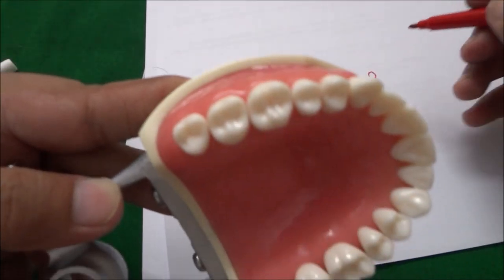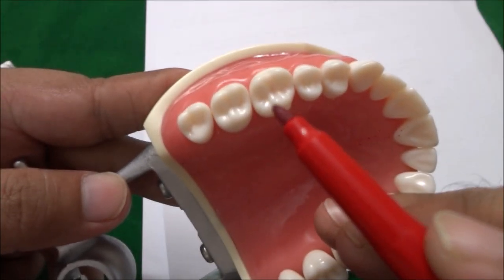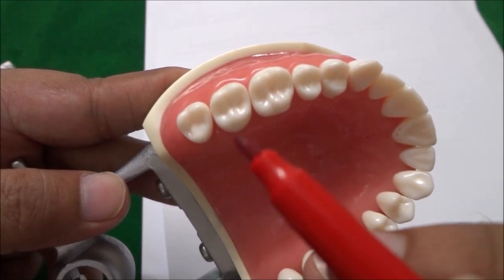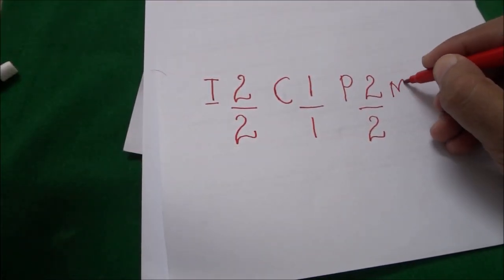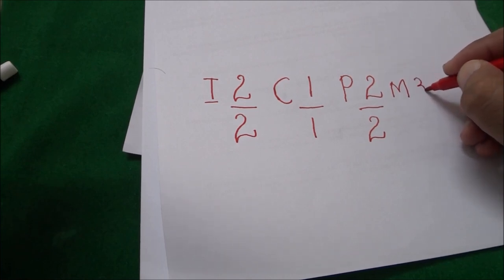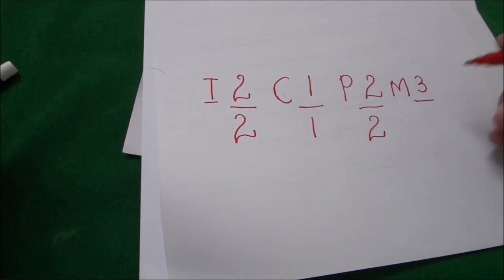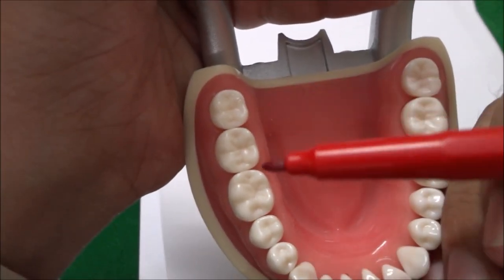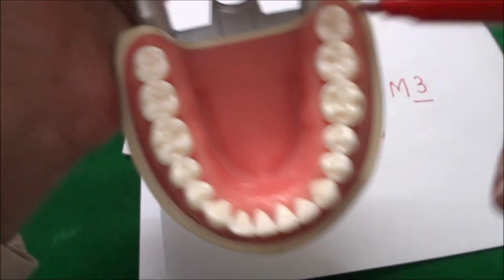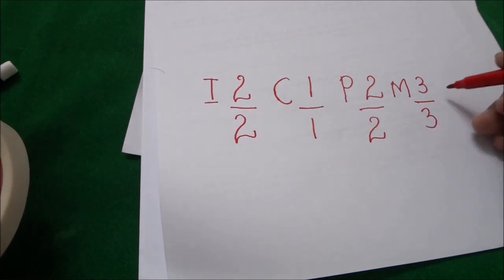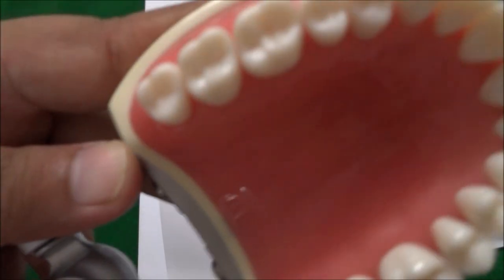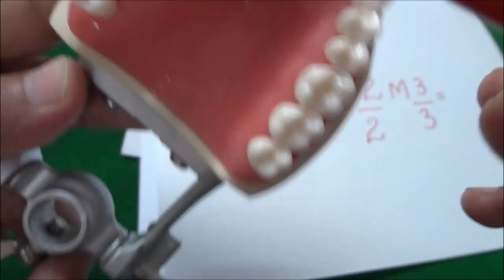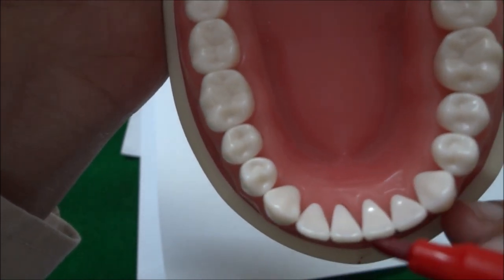Next to the premolars there are three molars — the first molar, second molar, and third molar — in the maxillary right quadrant. So we write M for molar and three, and draw a line. In the mandibular right quadrant there are also three molars: first, second, and third molar, so we write three. The total number of teeth in the maxillary right quadrant are eight and in the mandibular right quadrant there are also eight teeth.